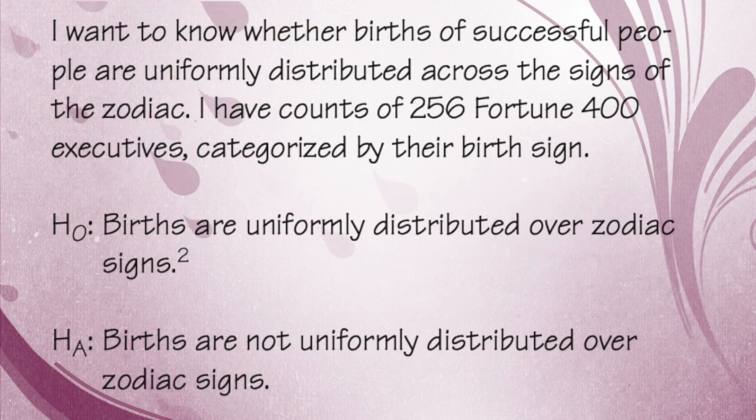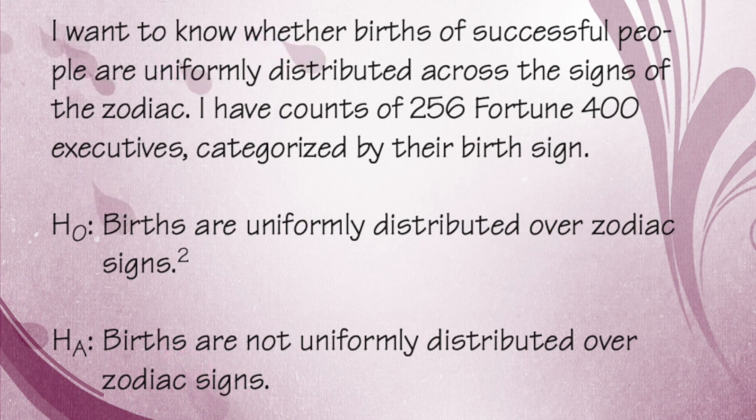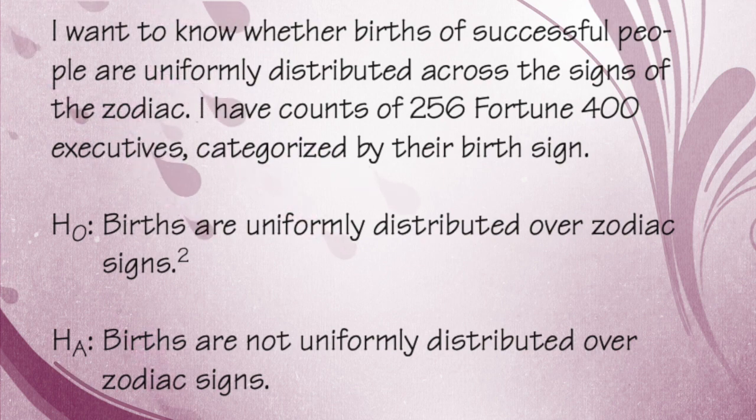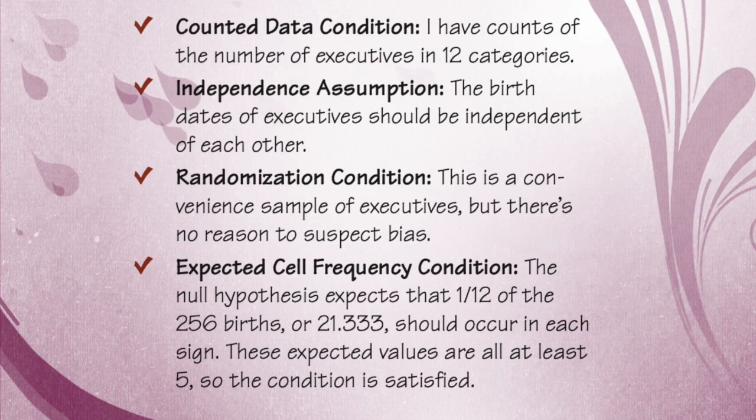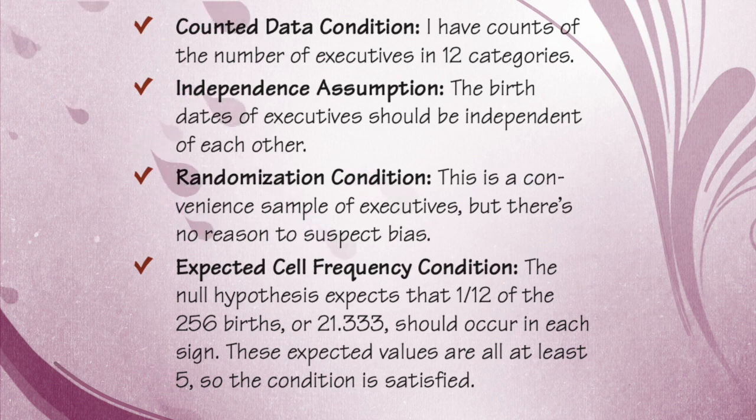I want to know whether births of successful people are uniformly distributed across the signs of the zodiac. Our null hypothesis: births are uniformly distributed. Our alternate hypothesis is that births are not uniformly distributed over zodiac signs. With our assumptions and conditions, the counted data condition, we have counts of the number of executives in 12 categories. The birth dates of executives should be independent of each other.